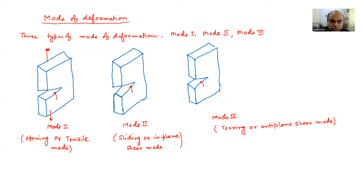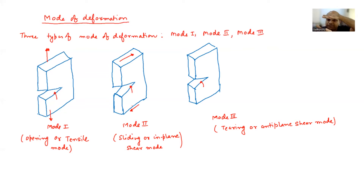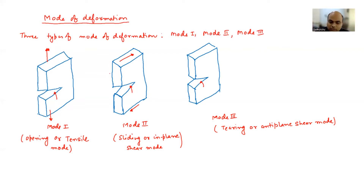Mode one is your opening mode. That means you're trying to open the crack — you apply a tensile loading and you're opening the crack. Mode two is sliding or in-plane shear mode. You're in the plane, sliding in this direction. You're applying load in-plane. And the last one is tearing mode — it's like paper. You're holding a paper and you're just tearing it.